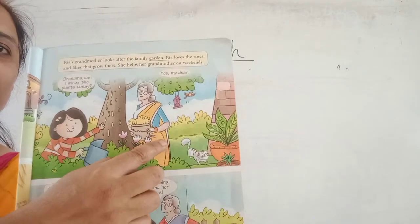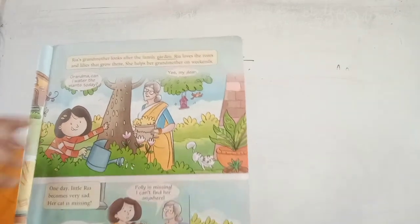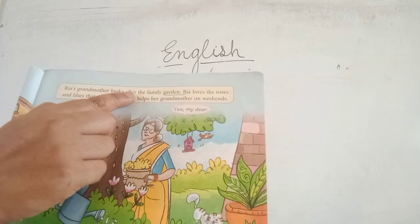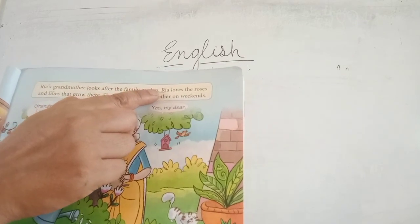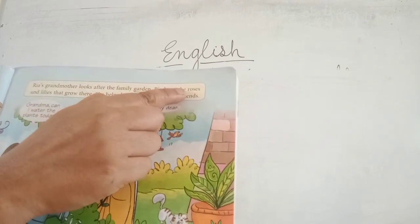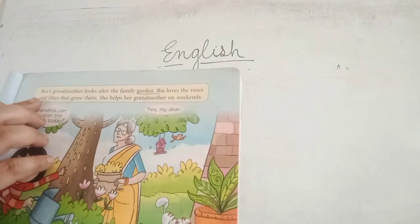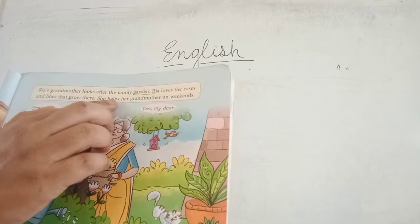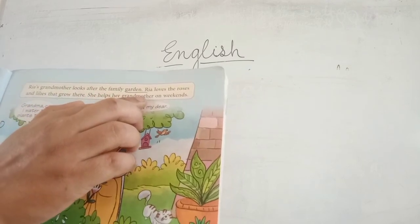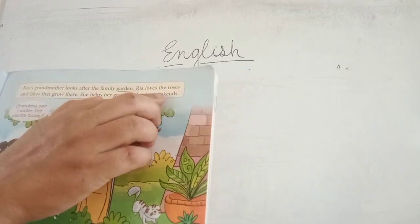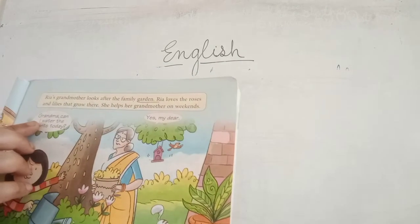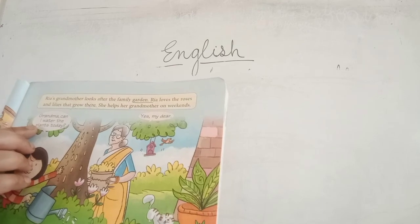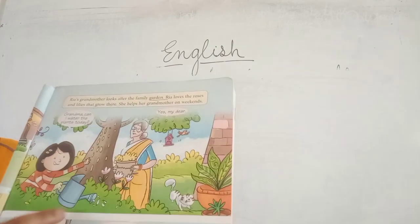Here is Ria's family garden. And who is she? She is Ria's grandma. Ria's grandmother looks after the family garden. Ria loves the roses and lilies that grow there. She helps her grandmother on weekends. Grandma, can I water the plant today? Yes, my dear.